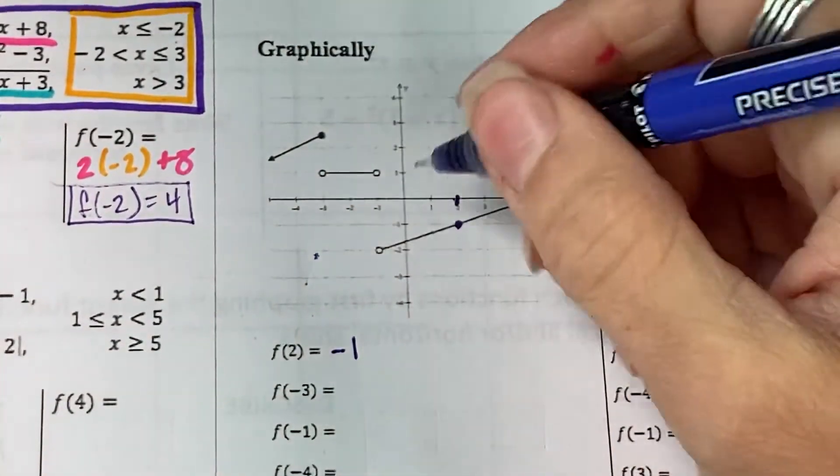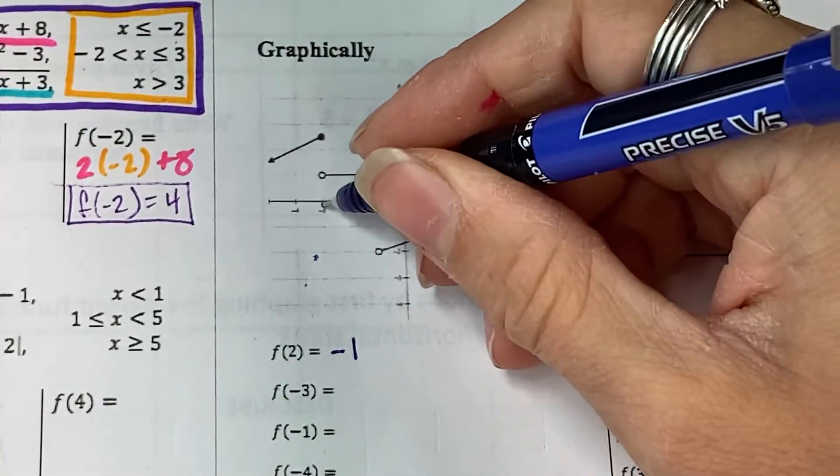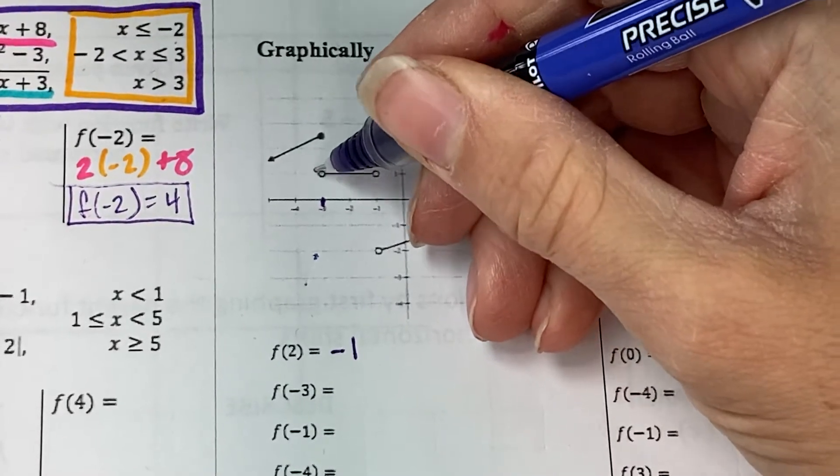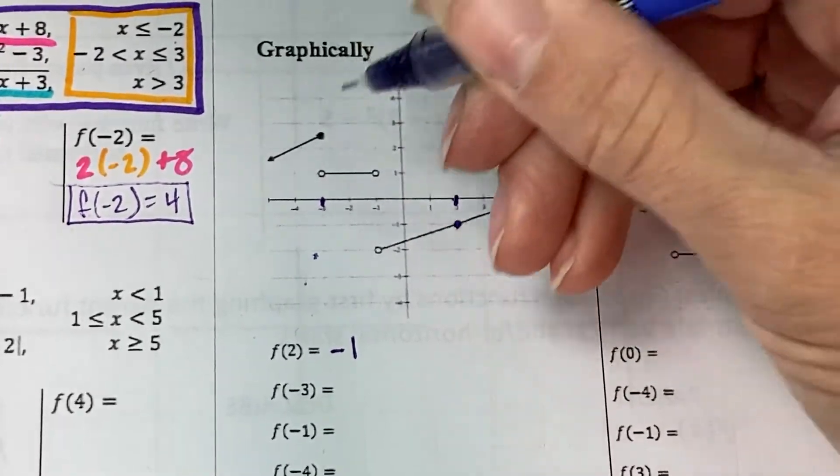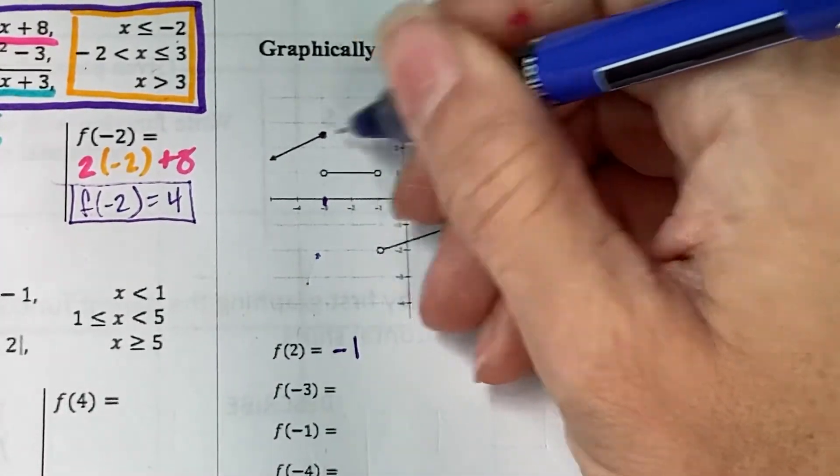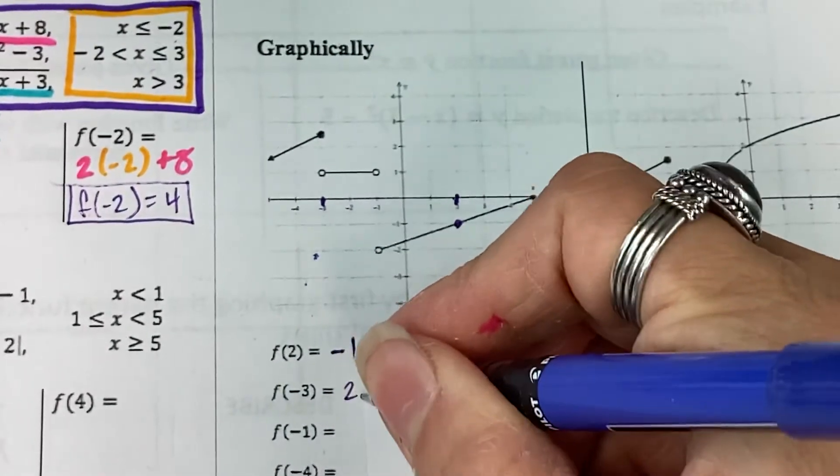At f of negative 3, we are 1, 2, 3 here. Now, at negative 3, am I defined at the open dot or at the closed dot? We're defined at the closed dot, and I'm going to say that is roughly 2.5-ish.